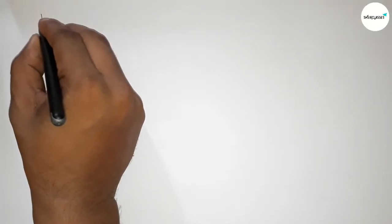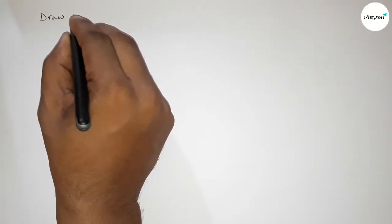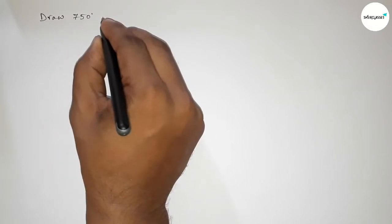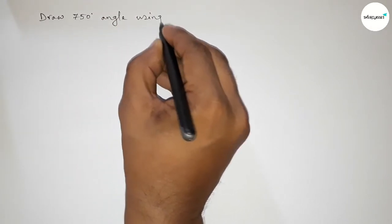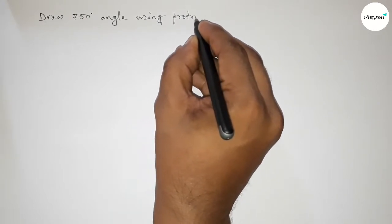Hi everyone, welcome to SI Share Classes. Today in this video we have to draw a 750-degree angle using a protractor in an easy way. So let's start the video.